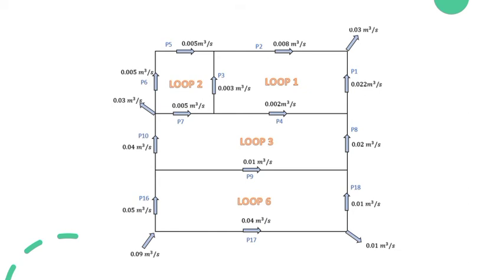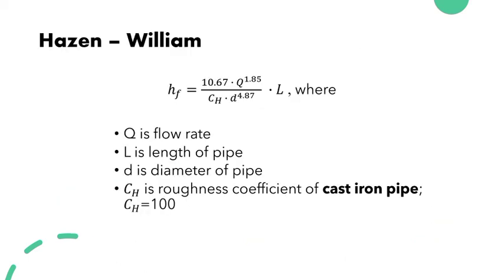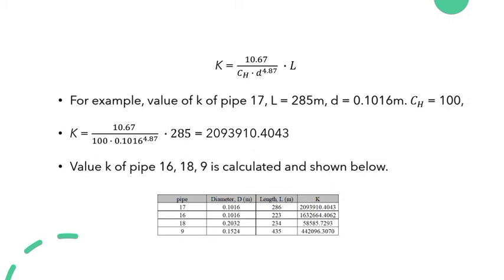I would like to introduce the calculation of loop 6. This is the pipe network diagram and this is the initial discharge of loop 6. In this project, we're using the equation of Hazen-William to determine the head losses. First, we calculate the value of K. By using this equation, the value of K for all pipes is determined.